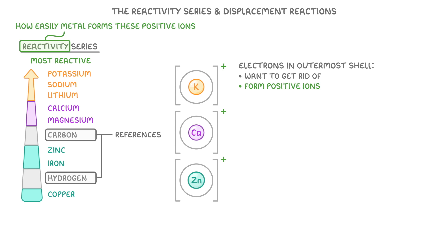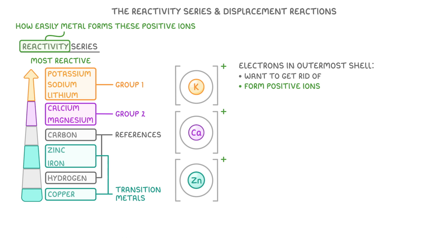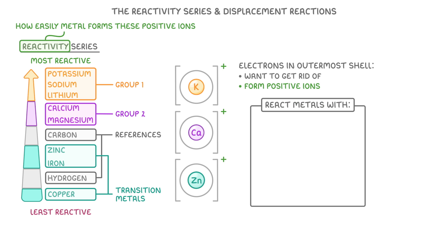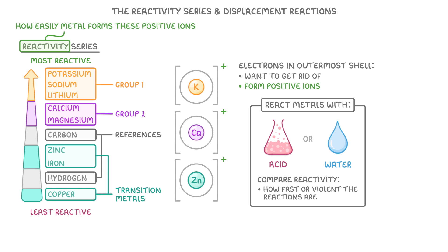The most reactive metals are the group 1 metals, with the group 2 metals being a bit less reactive, and the transition metals generally the least reactive. To figure out this list in the first place, we need to react each of the metals with either acid or water, and compare their relative reactivity by seeing how fast or violent the reactions are.